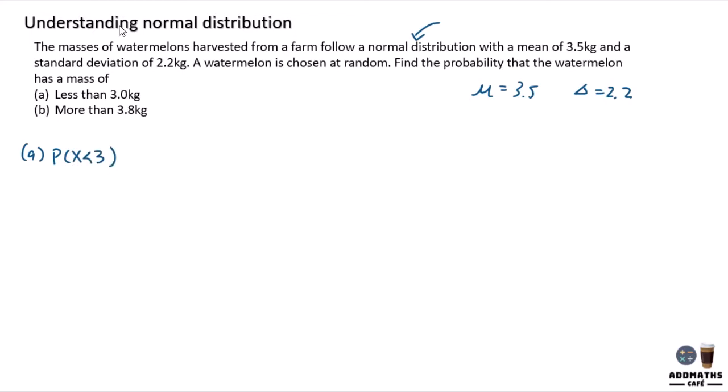So in this case, it means that I have a graph here which is an x graph and this is 3. So it is finding less than 3 over here. In the middle, it will be your mean. So 3.5, your 3 will be on the left and you need to transform into a z graph form.